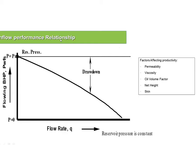If I have a reservoir with a productivity index of one, in order to produce 1,000 barrels of fluid I need a drawdown of 1,000 psi. But if the productivity index is 10, I need only about 100 psi drawdown to produce 1,000 barrels. Many factors affect productivity: the permeability of the reservoir, height, skin, viscosity, and the oil volume factor — all of which describe reservoir characteristics.